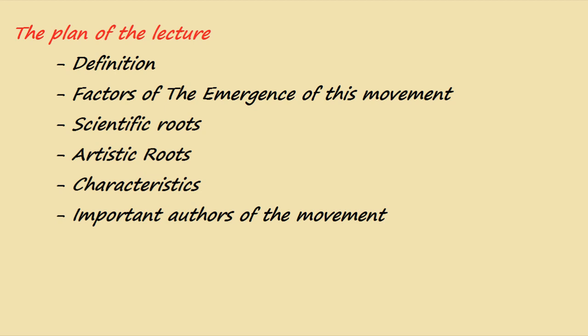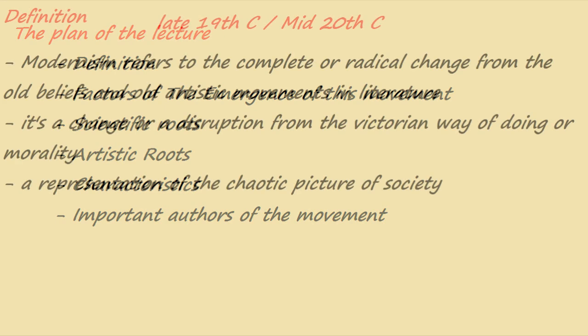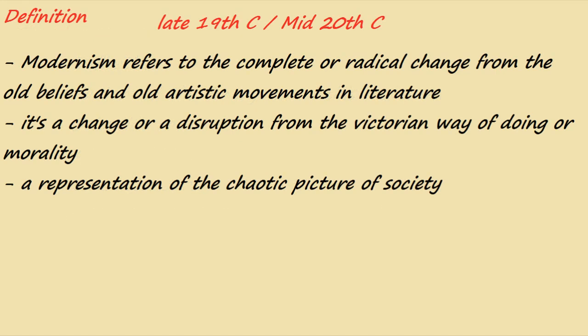Modernism started in the late 19th century until the mid 20th century. Modernism refers to the complete or radical change from the old beliefs, or the old artistic movements. In literature, it is sometimes considered a disruption from the Victorian way of doing or morality, and it can be a representation of the chaotic picture of society.